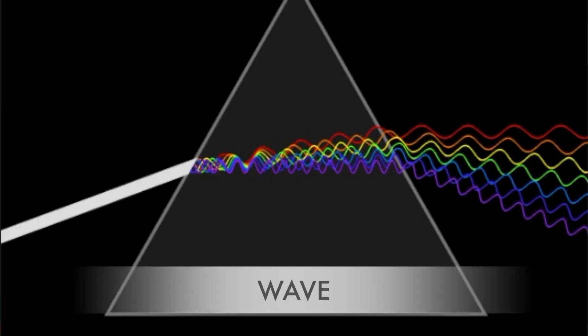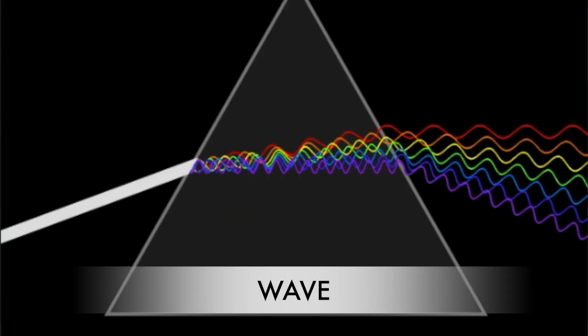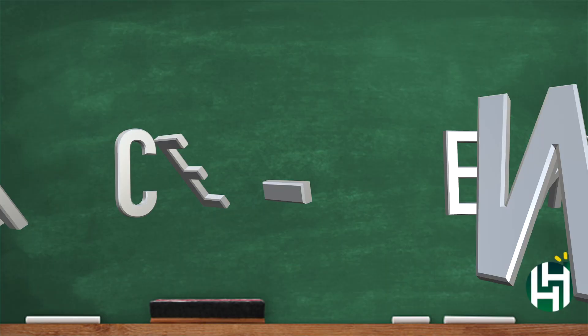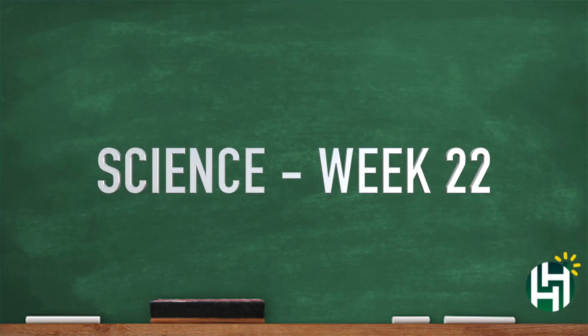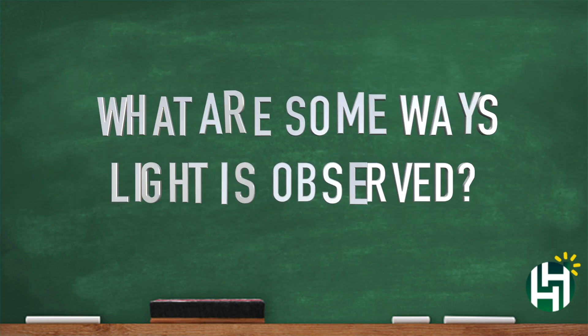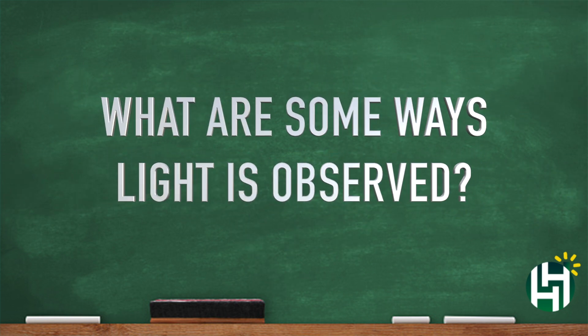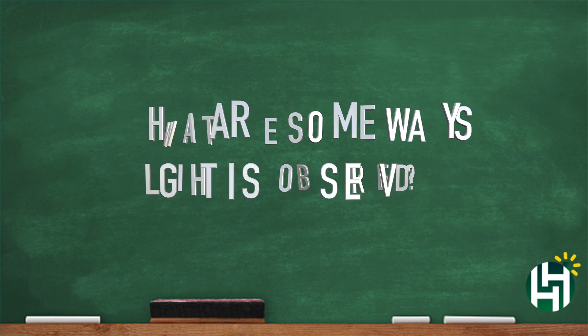One more time. Reflection, refraction, spectrum. Wave and particle. Okay, week 22 science — talking about light, what are some ways light is observed, how do we see it. There's a lot of ways; these are just some. And I'm out, bye.